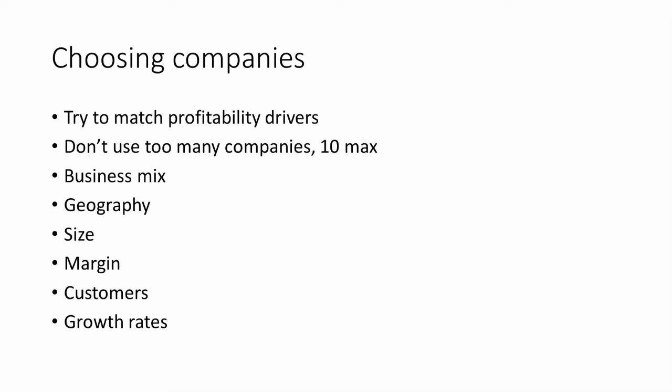When doing this, it's best not to use too many companies for comparison — probably 10 maximum. Look at the business mix: even two companies in the restaurant business, like Tasha's versus McDonald's, both in South Africa, have a very different kind of mix. Geography matters, as I mentioned. Size as well — even though it's possible to compare companies of different sizes, a size differential of a hundred or a thousand times means a very different kind of company. A differential of one or two times may still be comparable. Also look at margins, customers, and growth rates — all important factors when valuing a share versus its comparable companies.